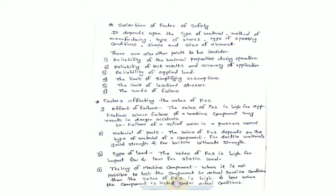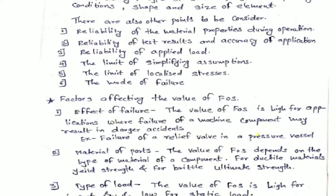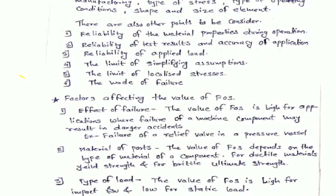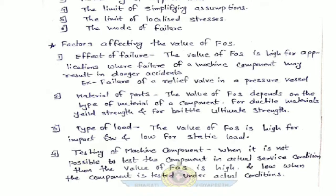Various factors are used for the selection of factor of safety: reliability of material properties during operation, reliability of test results and accuracy of the application, reliability of the applied load, the limit of simplifying assumptions, the limit of localized stresses, and the mode of failure. These are the general factors to be considered while selecting the factor of safety.